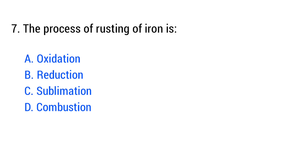Question number 7. The process of rusting of iron is? The right answer is option A: Oxidation.